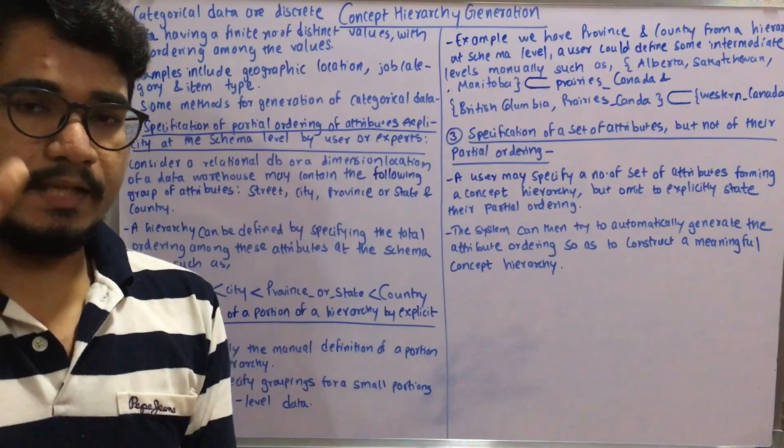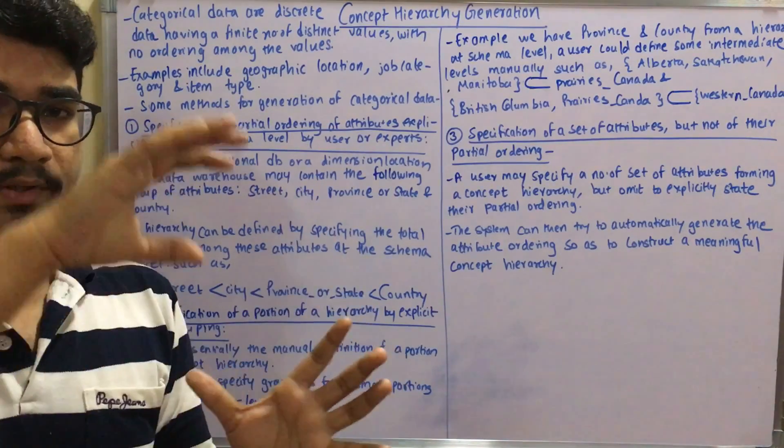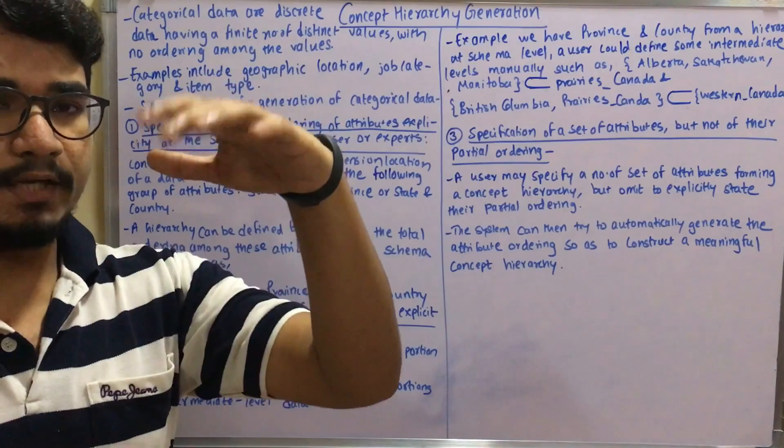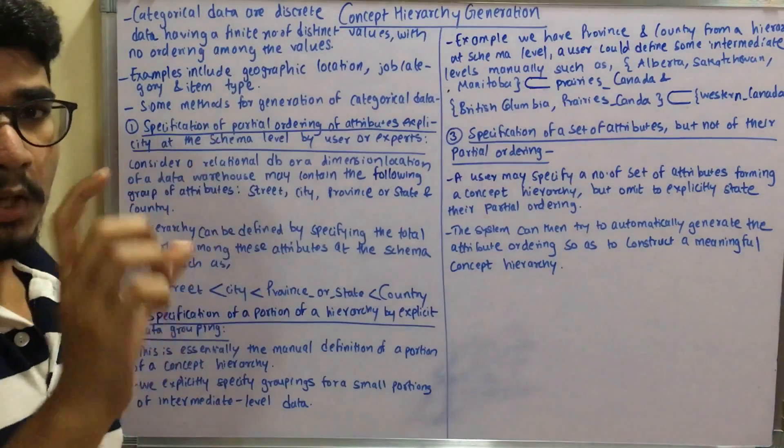From the entire world you have one particular continent, in that one country, then state, then province, then city, then street. There's a hierarchy generated from that particular random data - that's where partial ordering comes into picture.